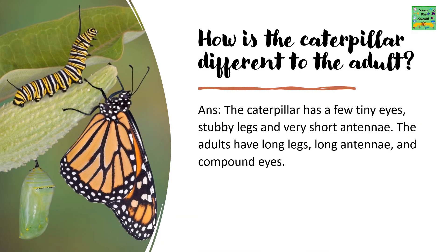How is the caterpillar different to the adult? The caterpillar has very few tiny eyes, stubby legs, and very short antennae. The adults have long legs, long antennae, and compound eyes.